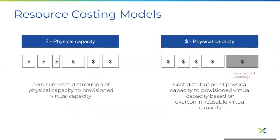There are two kinds of models for the physical to virtual cost distribution or allocation. Model one is a zero-sum cost distribution model which splits the cost of physical capacity — be it cores, memory, or storage — to provision virtual capacity on an actual basis. This model works for IT teams who wish to charge their end-user VMs for their usage, as well as the cost of waste from unused cluster infrastructure. This is called the actual virtual capacity model.